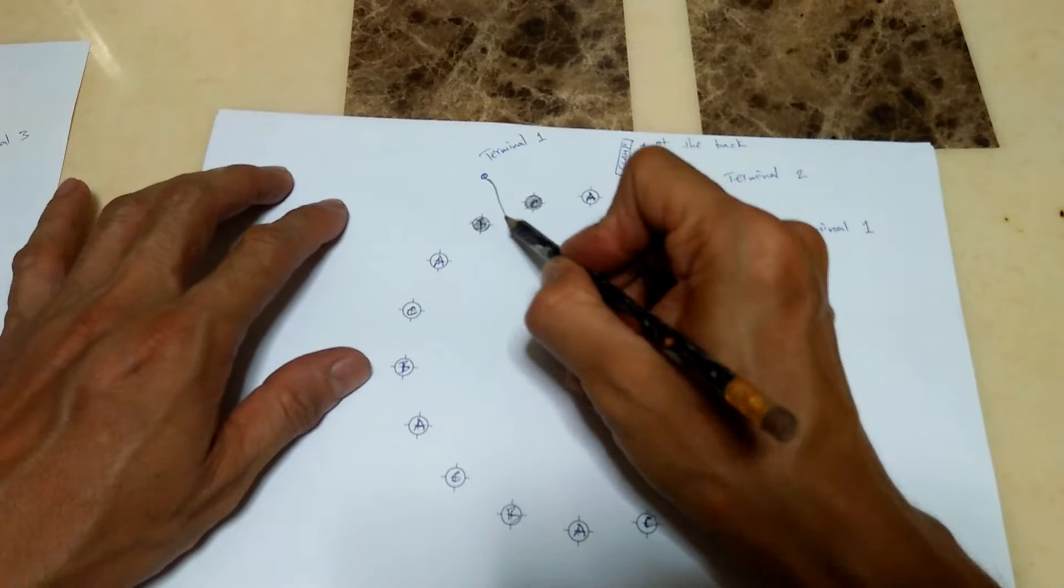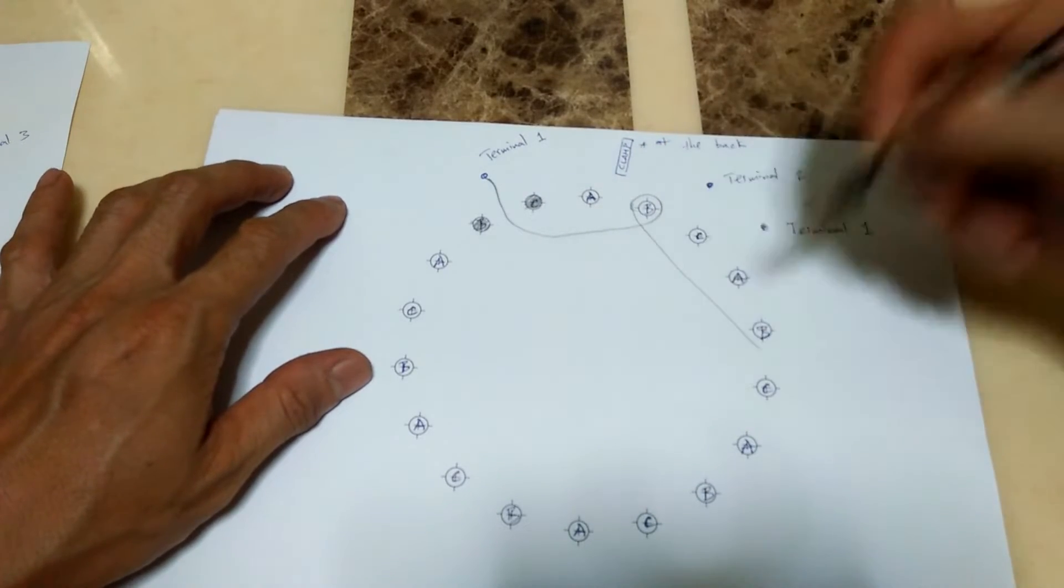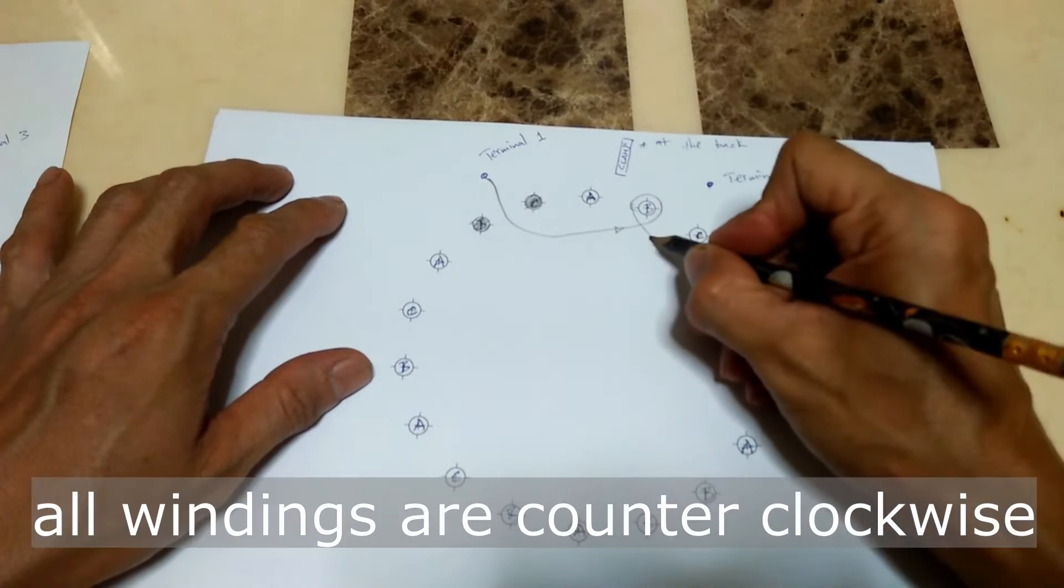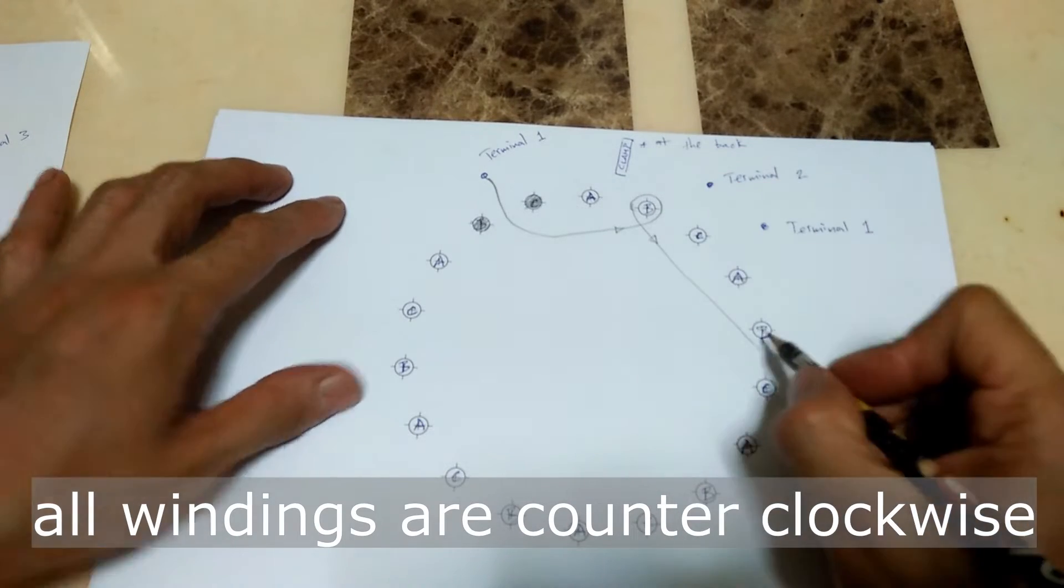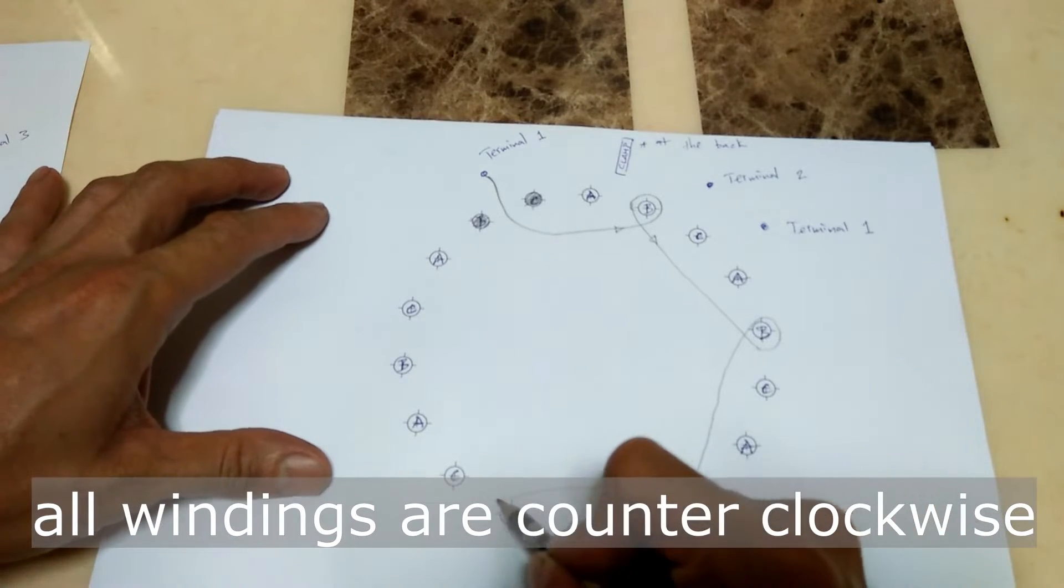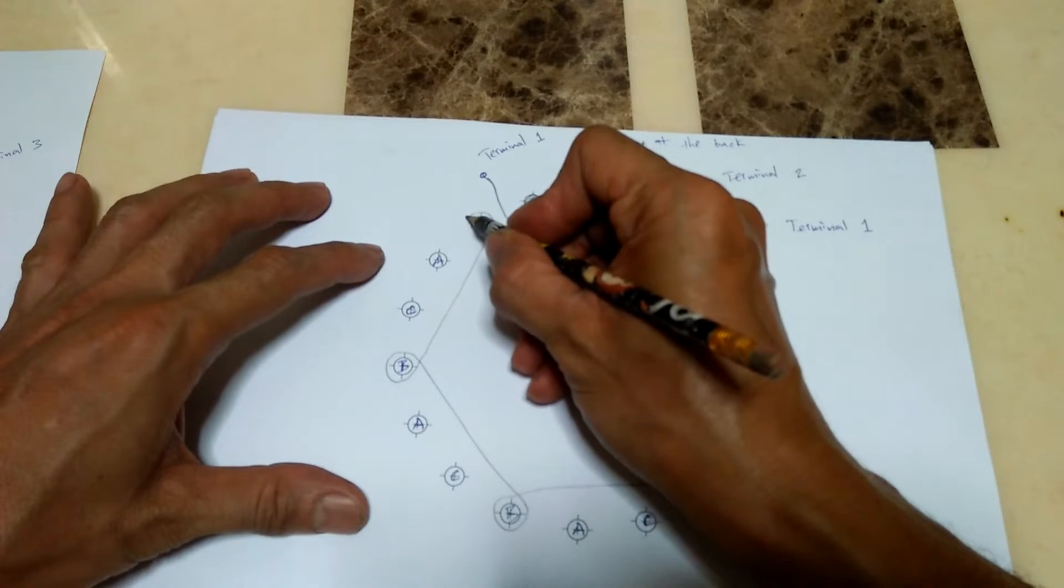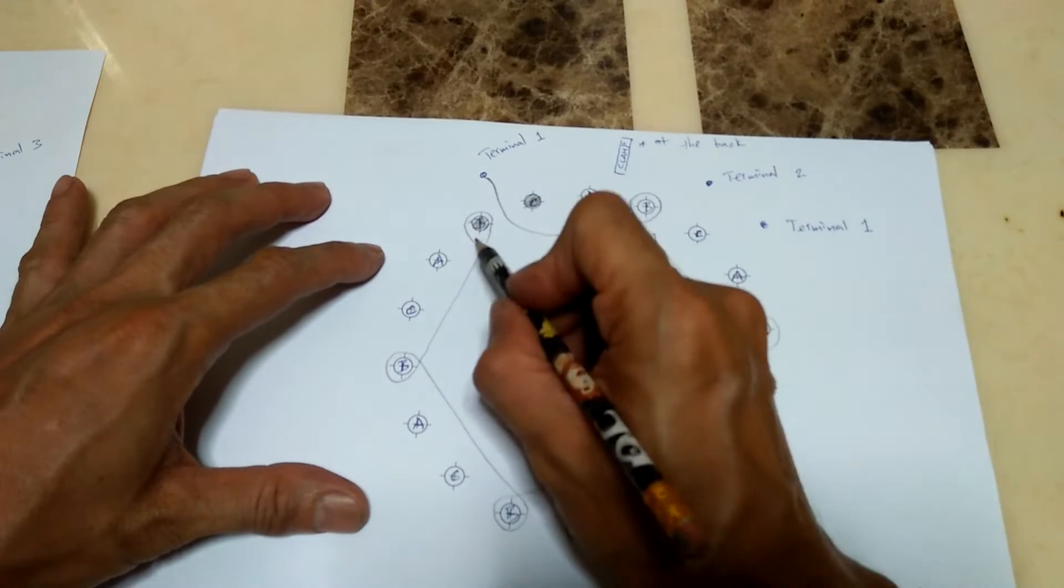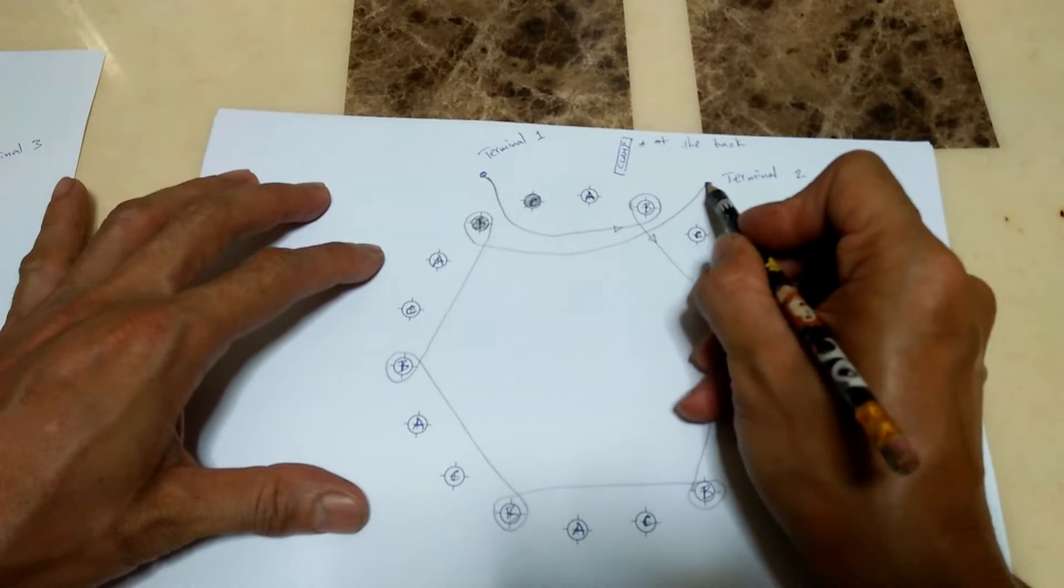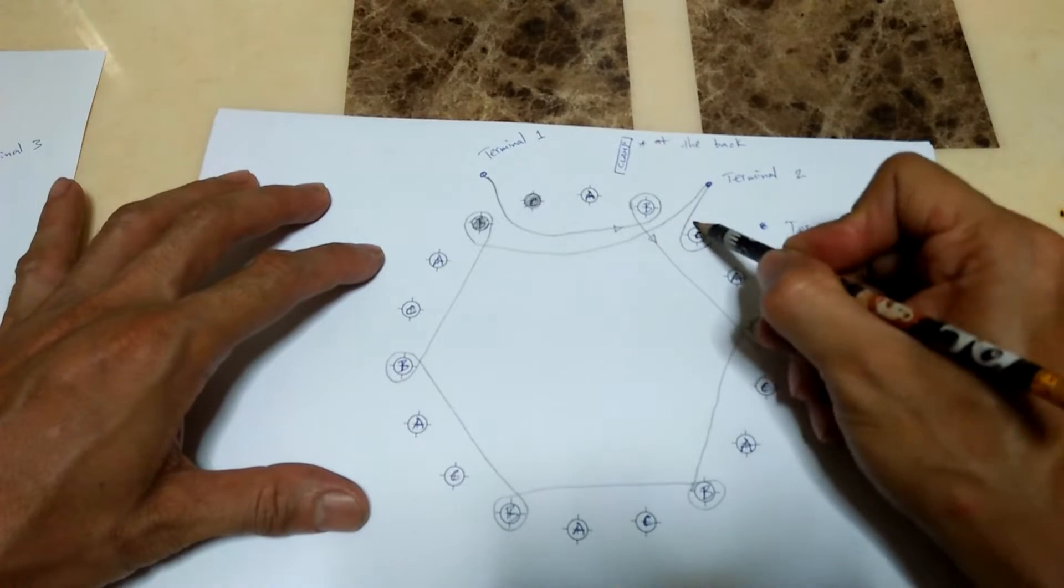I carefully traced the wires and this is how it is winded. Starting from terminal 1, the first coil windings go to B poles in counterclockwise orientation. It goes around the six poles and then terminates to terminal 2.